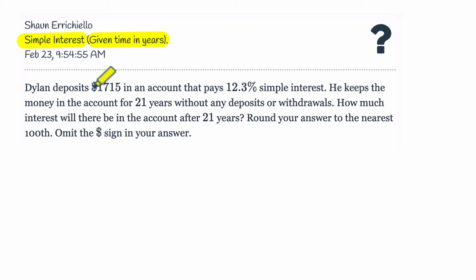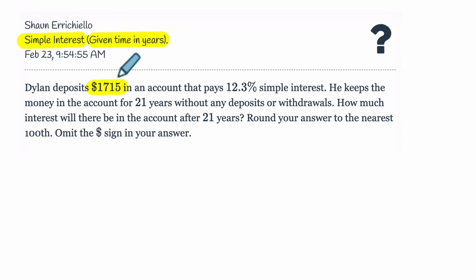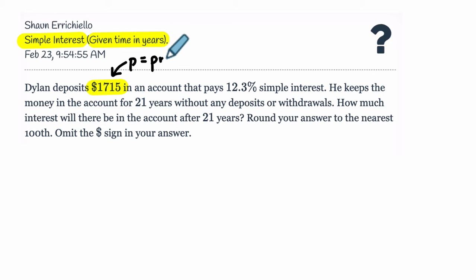We're told that Dylan deposits $1,715 in an account — you're putting money in an account. This is called P, which is our principal. That's the starting amount of the account — the principal.